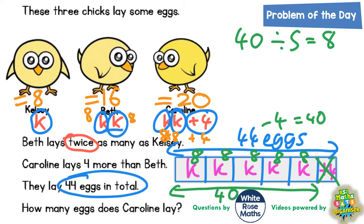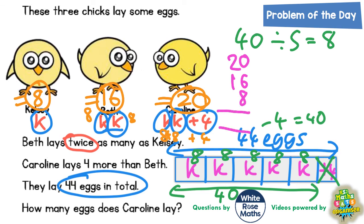Just to double check: Beth lays twice as many as Kelsey — 16 is twice as many as eight, so that works. Caroline lays four more than Beth — 20 is four more than 16, so that works. And they lay 44 eggs in total, so let's check 20, 16 and 8 add up to 44. 6 and 8 is 14, put the 4 down carry the 1, 2 plus 1 plus the carried 1 is 4, so it does add up to 44. The final answer is Kelsey lays 8 eggs, Beth lays 16 eggs, Caroline lays 20 eggs.